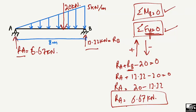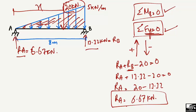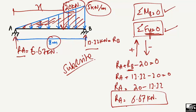This is how to find the support reactions for any kind of beam with any kind of loading. The key steps are: first, find the area of the load shape to get the equivalent point load; then find the centroid distance for moment calculation; and finally apply the equilibrium equations. You can practice with different values of span and load intensity on the same beam type.